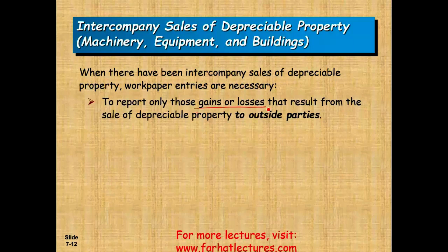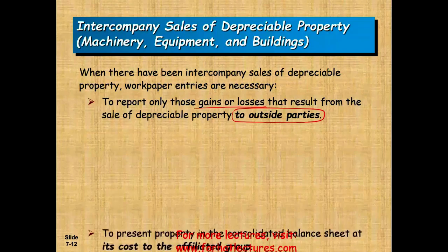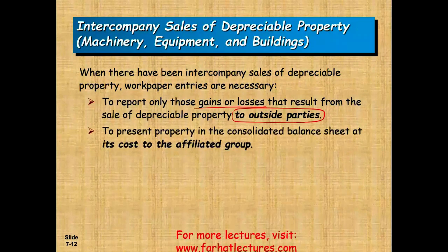We only report gains and losses that result from a sale of depreciable assets to an outside party. Any intercompany gains and losses — between inside parties — are eliminated. Part of the elimination entries is to present the asset and property on the consolidated balance sheet at its cost to the affiliate. If the sub sold it, we use the sub's original cost. If P sold it, we go back and report it at P's cost.